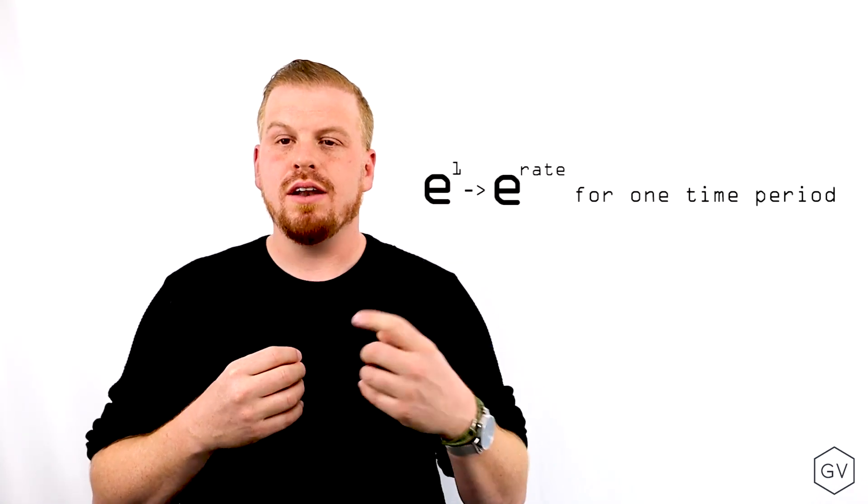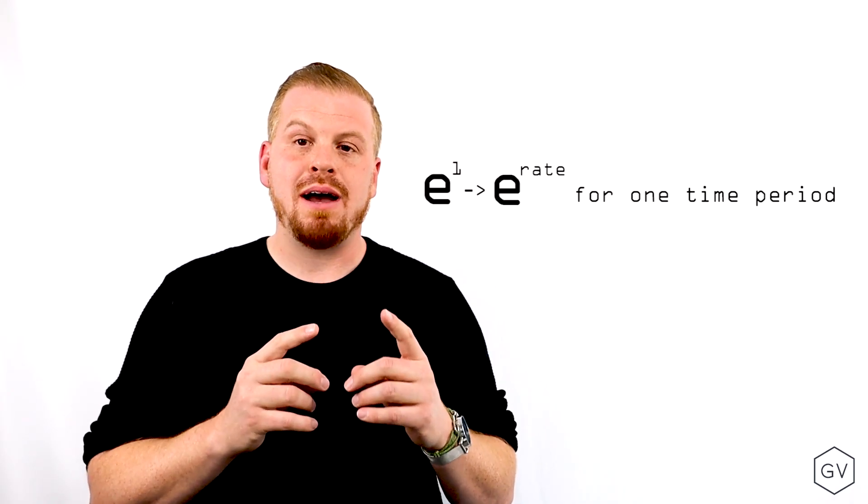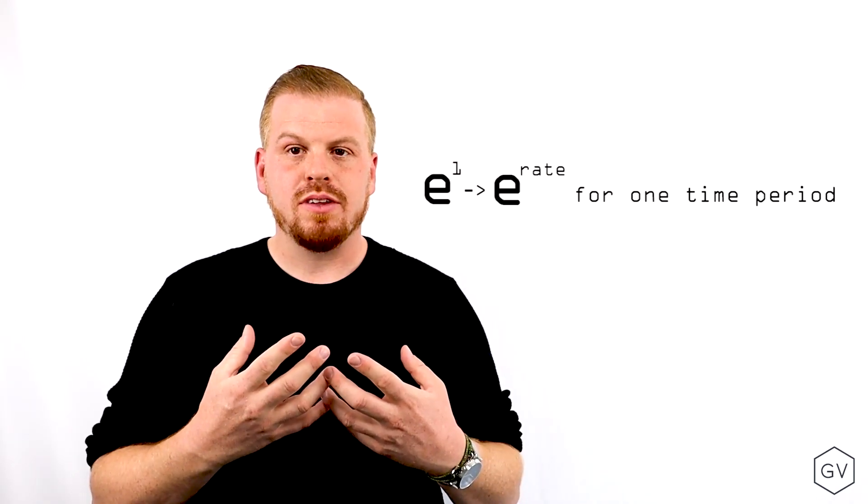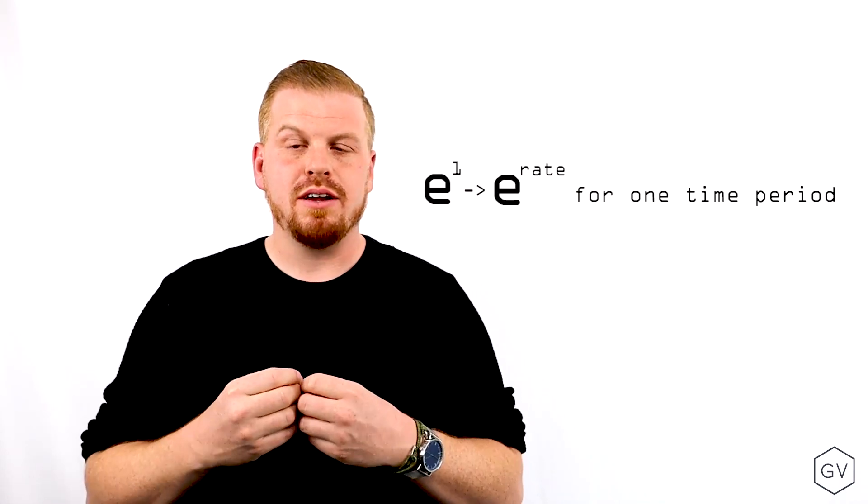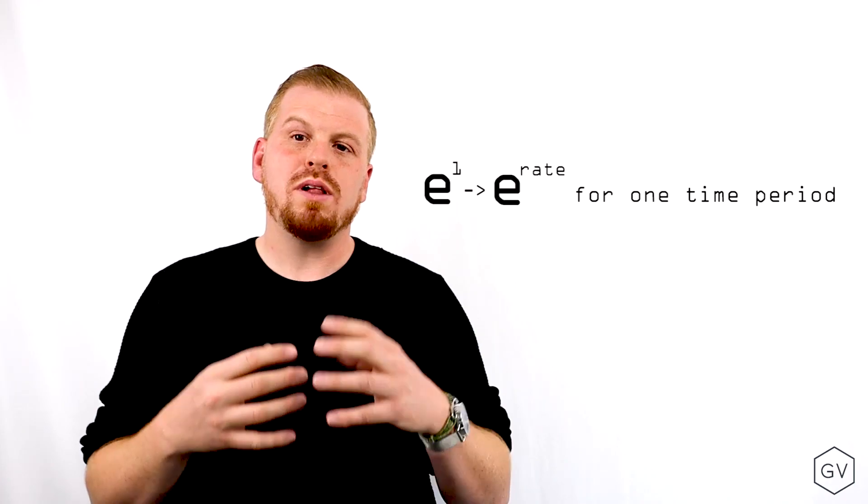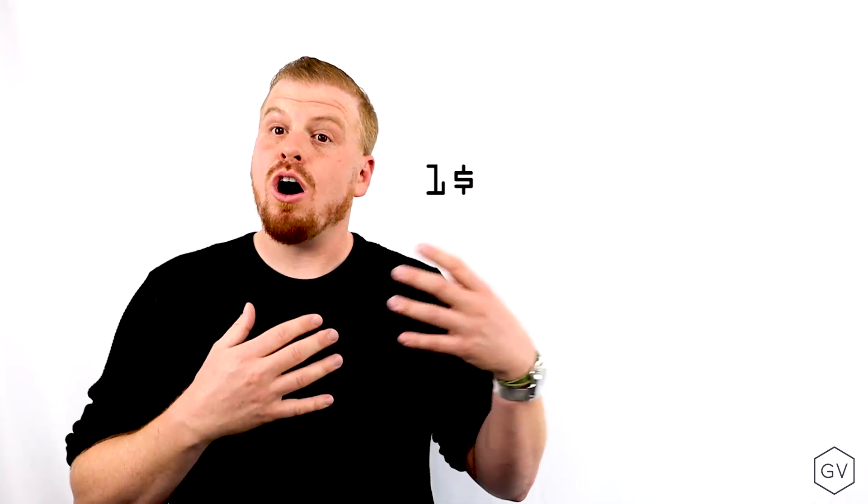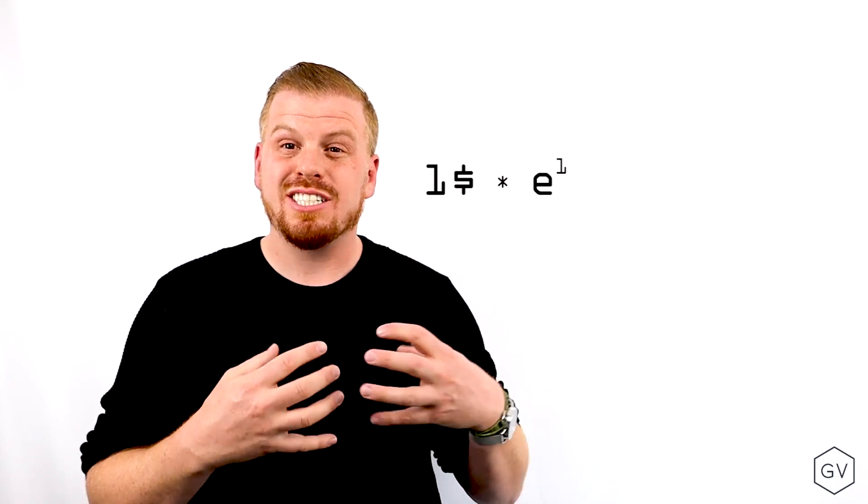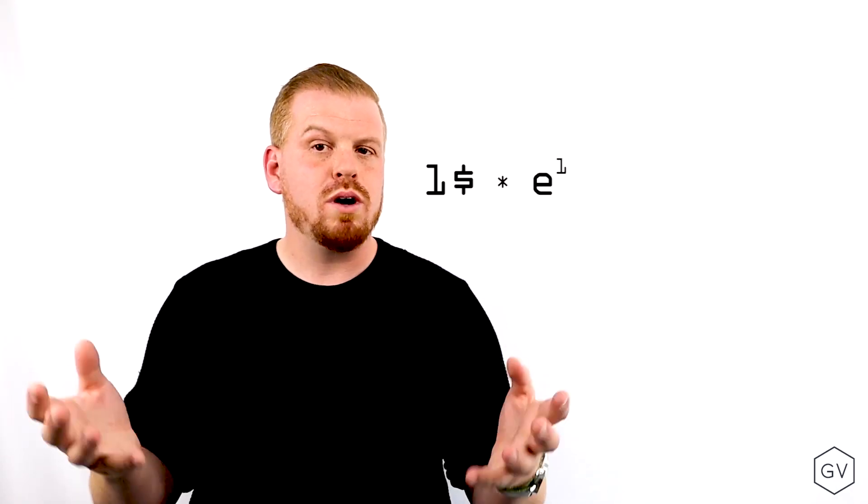So how do we work with E? When we look at E, say E to the one, what we're really saying is, what is the continuously compounded return of one or 100% for one period? So what does that mean? Well, it means that if I invest $1 at 100% rate of return, which is continuously compounded for one period, which is normally one year, but it could be one day or one week or whatever,